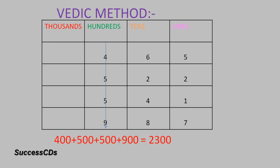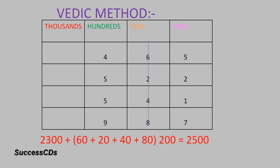So you add up 400, 500, 500, and 900. The total you will get is 2300. You can write down this figure only — 2300. And then the next step is you add up the tens place digits along with their place values: 60 plus 20 plus 40 plus 80 gives you 200. So under the 2300, write down 200 also. The total is 2500.